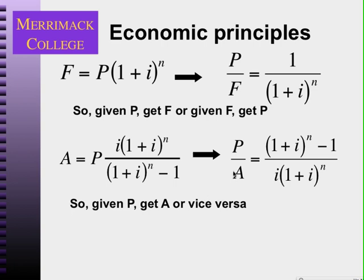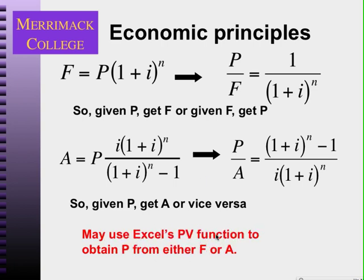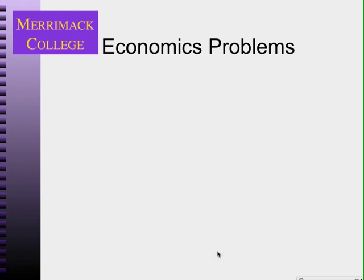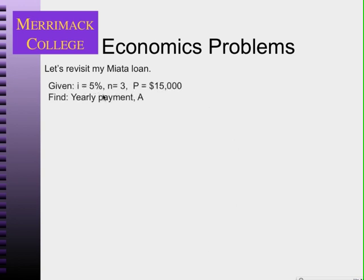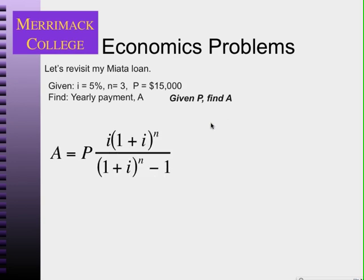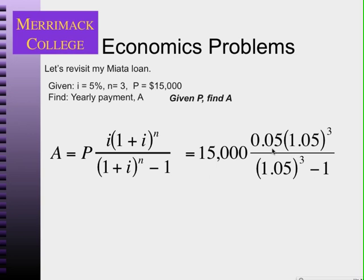Since you won't have Excel with you in the FE exam, it's probably not a good idea to rely on it for these problems. Let's revisit the Miata loan: interest rate 5%, number of periods 3 years, borrow $15,000 — what is the yearly payment? Given P, find A. Plugging into the capital recovery factor formula, it comes out to approximately $5,500 per year.